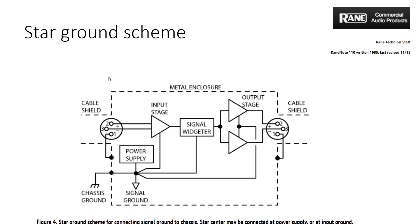Star Ground Schema: For high switching current devices like Class D amplifiers, proper grounding is even more important. The star grounding principle should be applied for signal grounding. Typically, manufacturers give best practice recommendations. This is one of the reasons to use a proven manufacturer OEM module over unknown design boards.